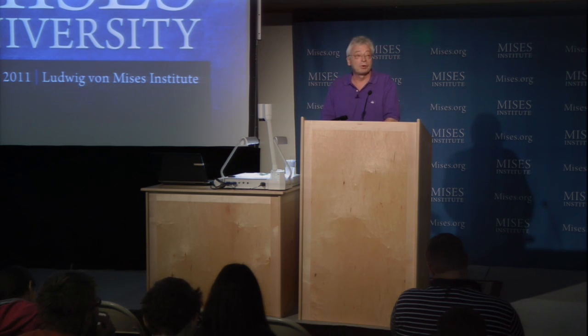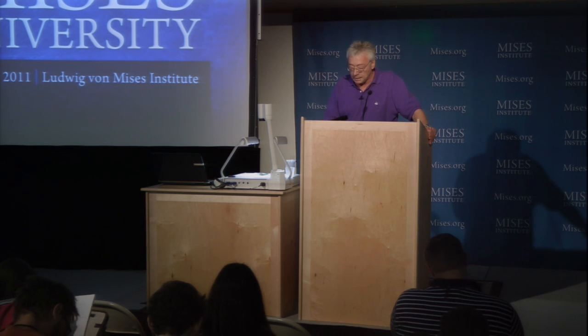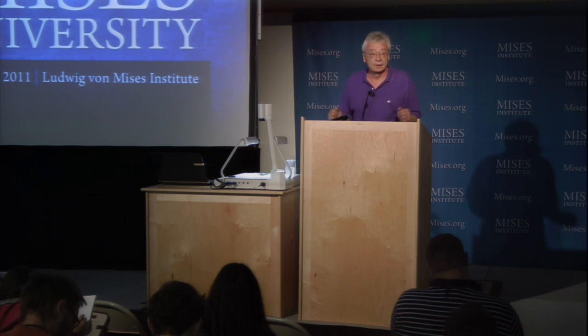The theory of probability that Richard von Mises formulated is usually referred to as the frequency interpretation of probability. First, it is possible to speak about probabilities only in reference to a properly defined collective — meaning nothing else but a group, a class of individuals. Unless you have a group, unless you have a class, every talk about probability is nonsense according to Richard von Mises.